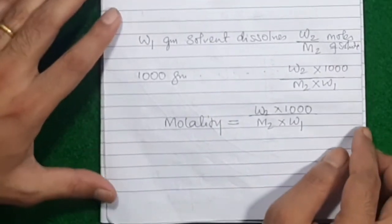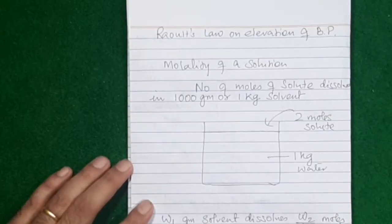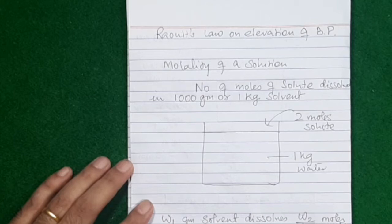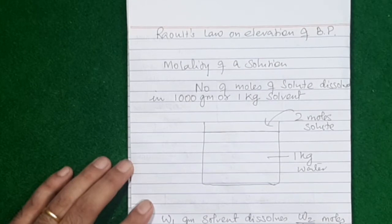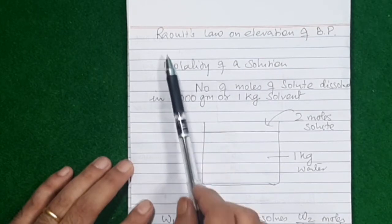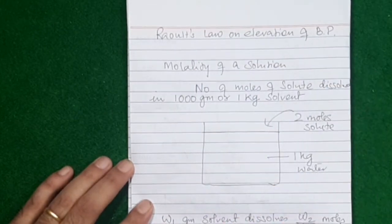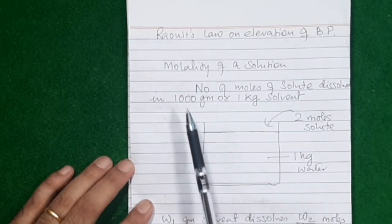Now there's a Raoult's law. You've seen so many Raoult's laws — on binary mixtures of two volatile liquids, on vapor pressure of a solution, and on relative lowering of vapor pressure. Now we have the fourth Raoult's law: Raoult's law on the elevation of boiling point of a solution.